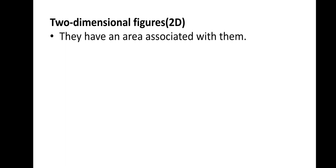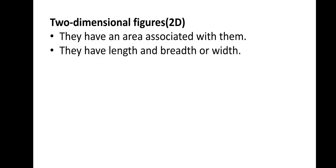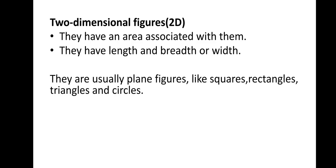Then we have 2-dimensional figures. Using 1-dimensional figures we can get 2-dimensional figures. They have an area associated with them. Rectangle is a 2-dimensional figure — it has length as well as breadth. Square is also a 2-dimensional figure with area. Pentagon, hexagon, octagon, and circle also come under 2-dimensional figures. They have length and breadth or width — 2 dimensions — and are usually plain figures like squares, rectangles, triangles and circles.